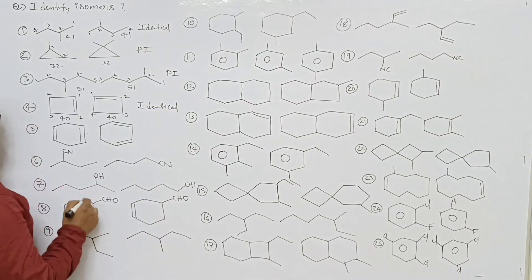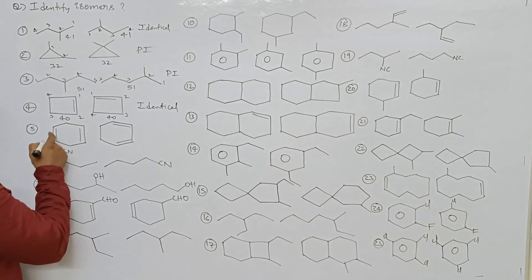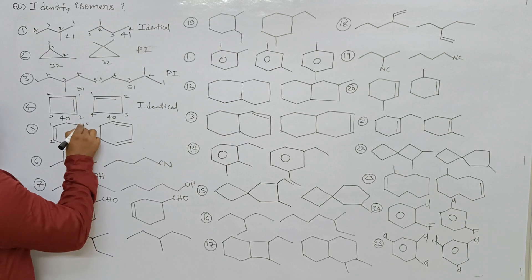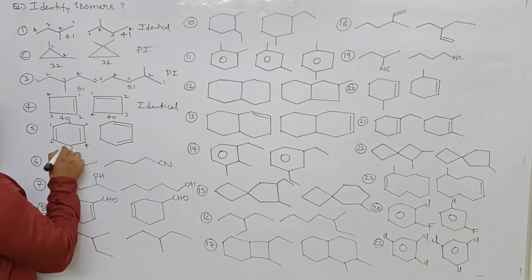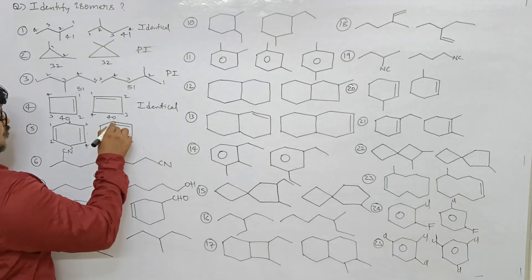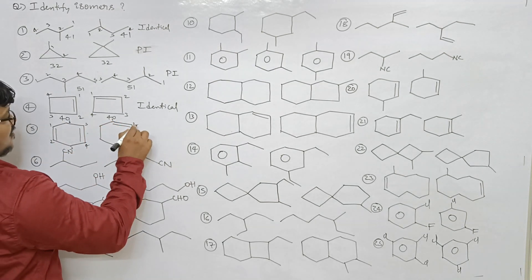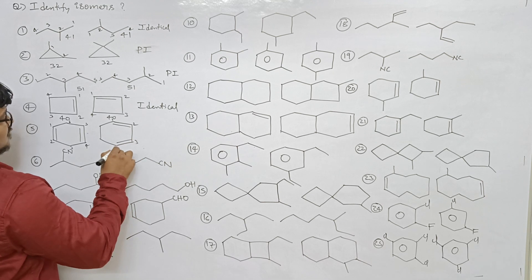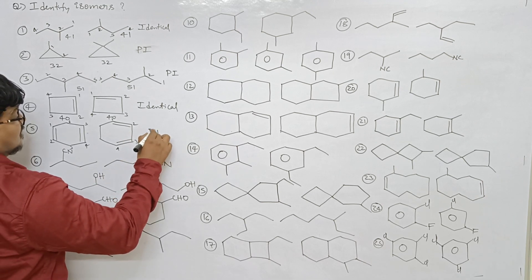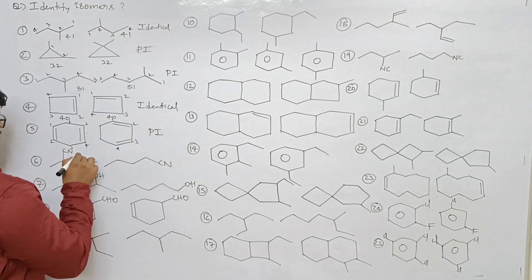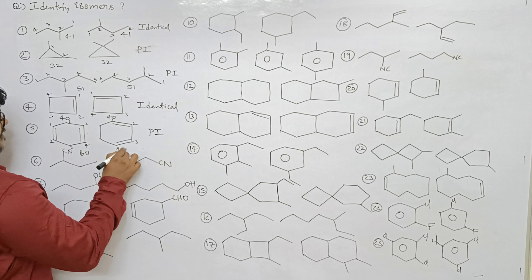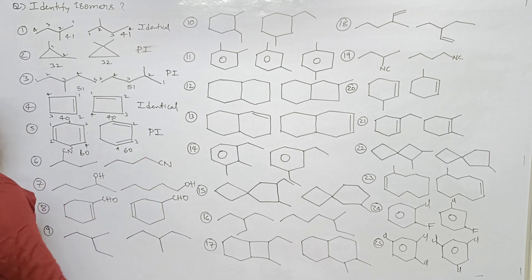Next one: one two three four five six — positions one-four and double bond one position here, one-three position there. So both are positional isomers. Isomeric number same — 60 and 60.